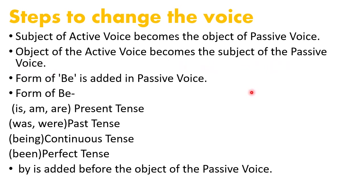Tense rules and verbs will change according to the rules. Just remember that subject of active voice becomes object of passive voice, and object of active voice becomes subject of passive voice. Next, forms of 'be' are added in passive voice. Forms of be are: is/am/are for present tense, was/were for past tense, being for continuous, and been for perfect tense. Also, 'by' is added before the object of passive voice.